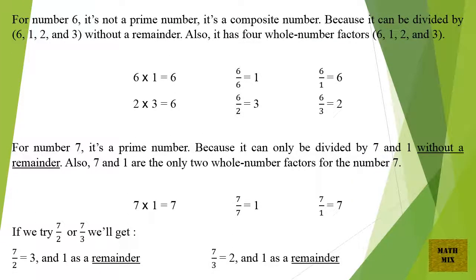For number 6, it's not a prime number — it's a composite number, because it can be divided by 6, 1, 2, and 3 without a remainder. It has 4 whole number factors: 6, 1, 2, and 3. 6 × 1 = 6, 6 ÷ 6 = 1, 6 ÷ 1 = 6. Also, 2 × 3 = 6, 6 ÷ 2 = 3, and 6 ÷ 3 = 2.